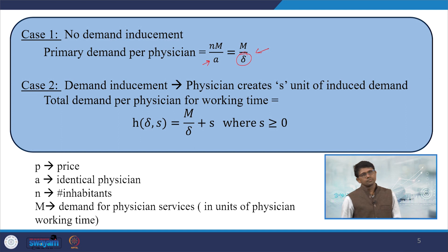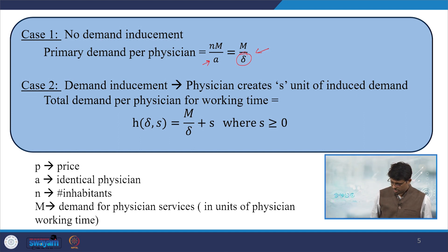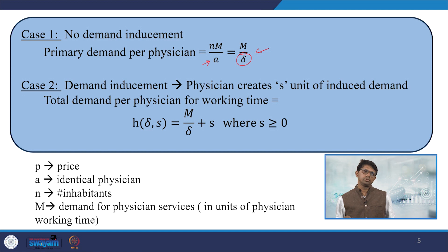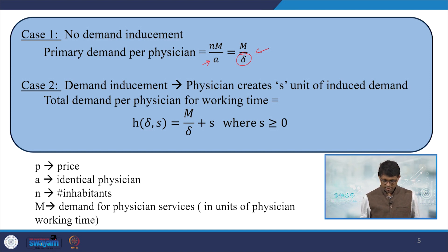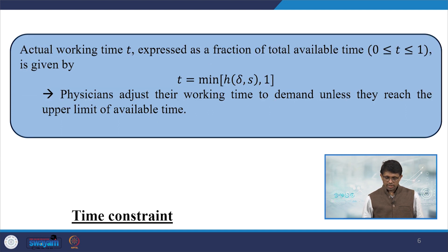When inducement is used, as we have seen in a number of cases — particularly in the Indian context where supply side is quite low compared to demand — supply inducement is expected to be very high. Hospitals and healthcare units provoke patients in various ways to increase their demand. Hence a component S is added: total demand becomes M upon delta plus S, where S stands for the units of inducement. M is the demand for physician services.